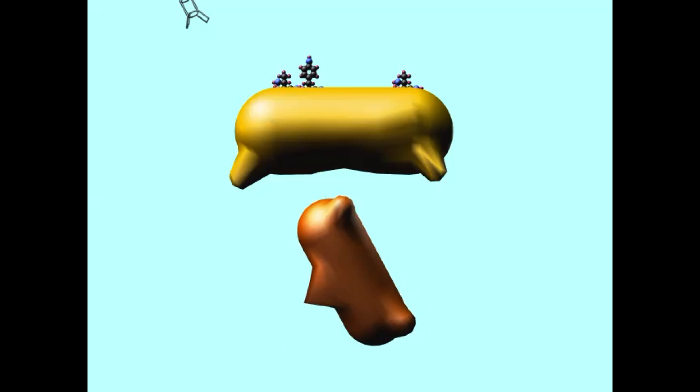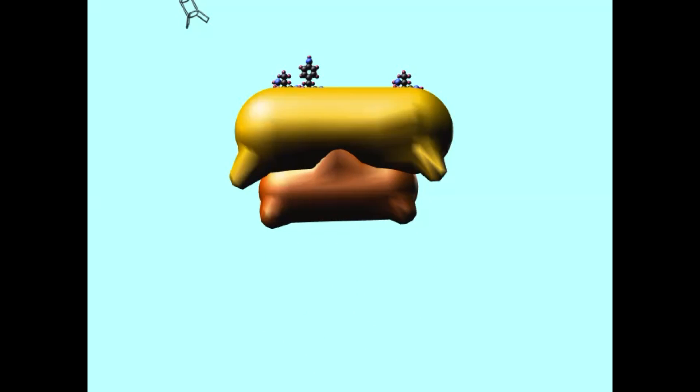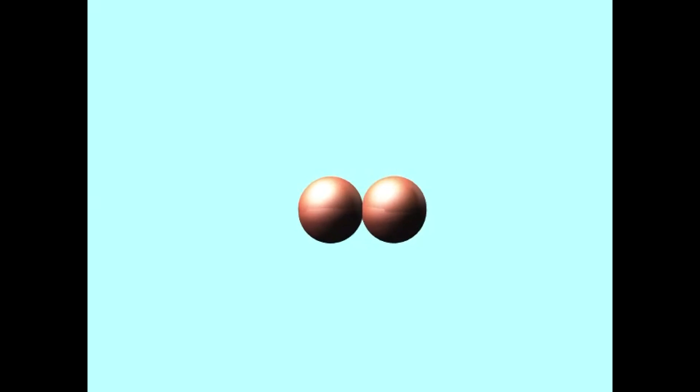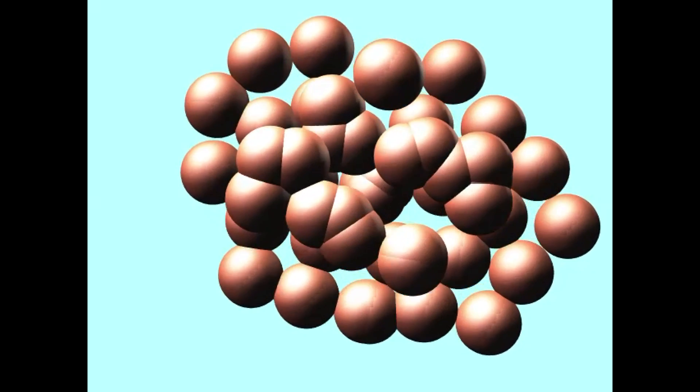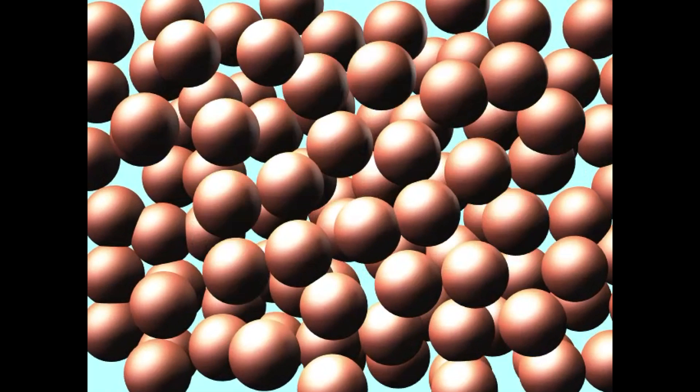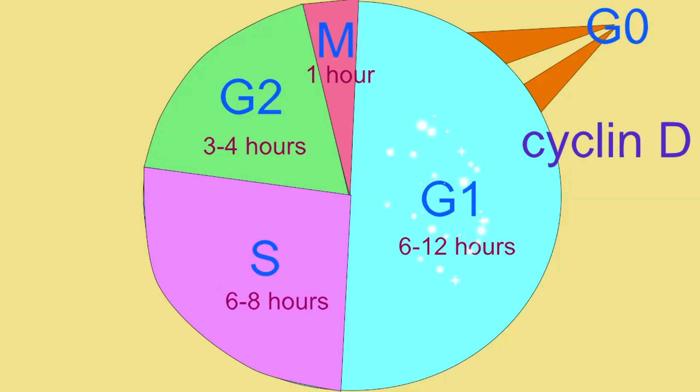The group of proteins known as cyclins are an important set of master switches for various stages of the cell cycle. These cyclins help to signal multiple proteins within the cell as to which actions are appropriate at a given stage of the cell cycle.